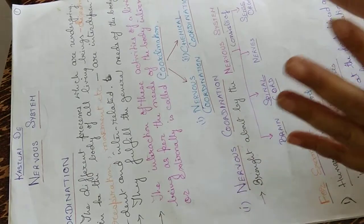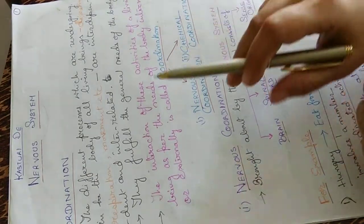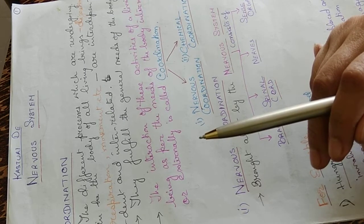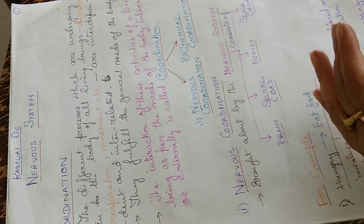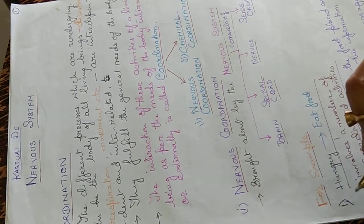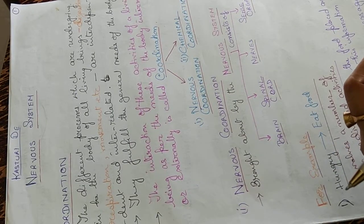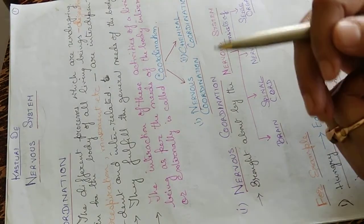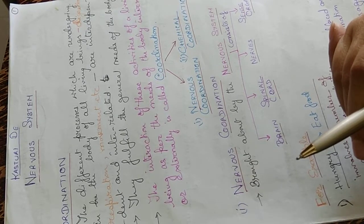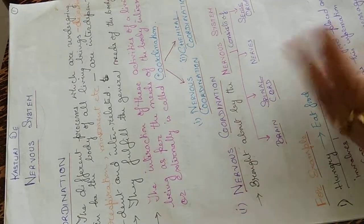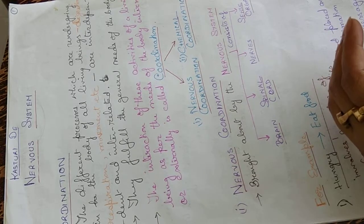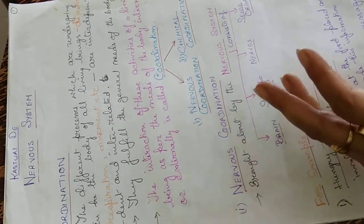What is the Nervous System actually? The different processes undergoing in the body of all living beings — such as digestion, respiration, movement, etc. — are all interdependent and interrelated. They fulfill the general needs of the body. The interaction of these activities of a living being as per the needs of the body, internally or externally, is known as coordination.